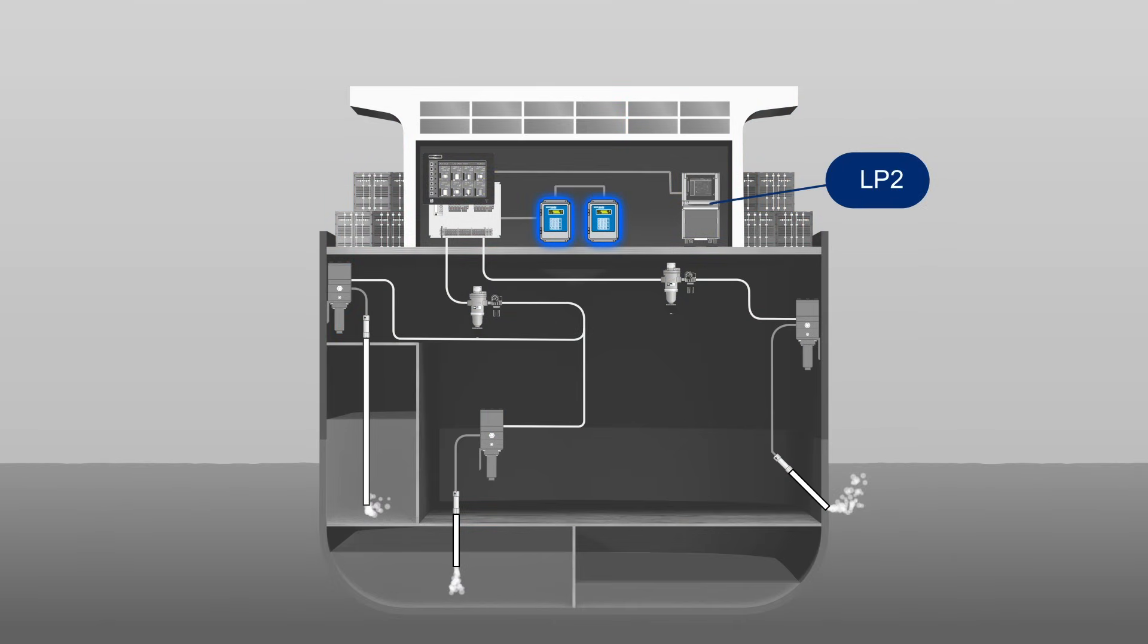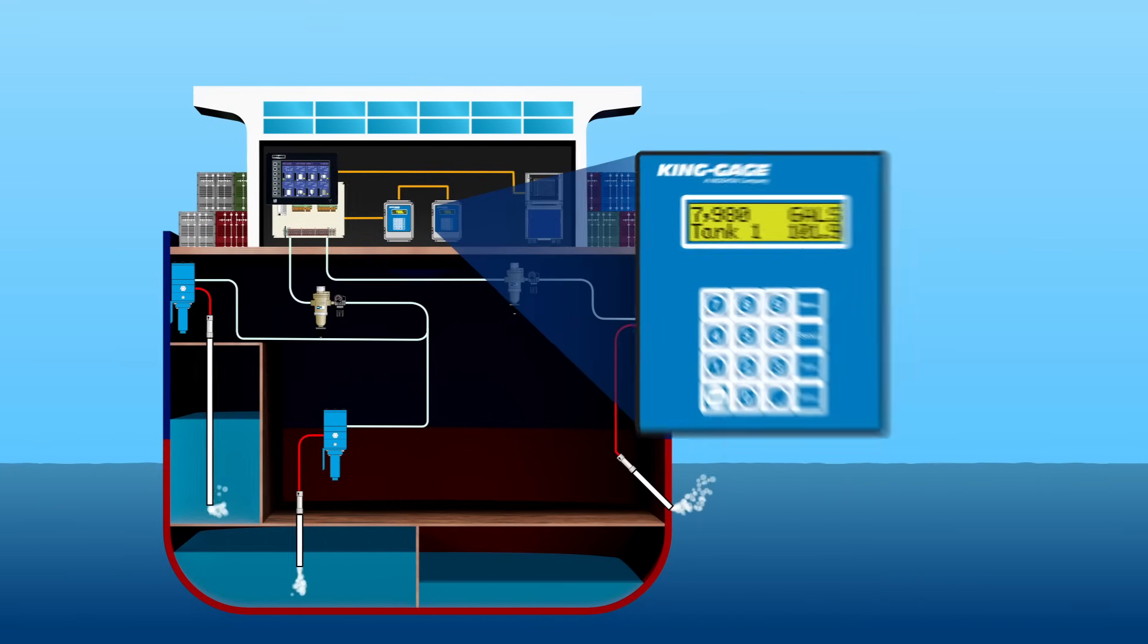The LP2 will indicate tank levels for ballast water, fuel oil, potable water, and draft measurement. An alphanumeric LCD panel provides 10-character tank identification with 8-digit display value of depth, volume, and percent full.